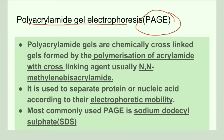Polyacrylamide gels are chemically cross-linked gels. They are formed of two components: acrylamide that has been polymerized, and a cross-linking agent, usually N,N'-methylene bisacrylamide. It is used for the separation of proteins as well as nucleic acids, and this separation is based on electrophoretic mobility.